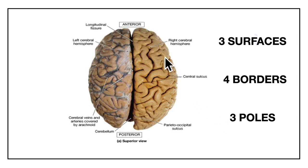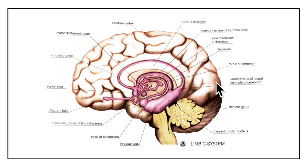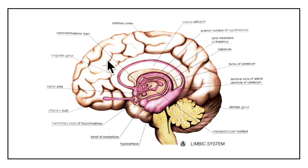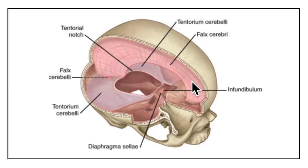For better understanding, I will be explaining these terms on the basis of one cerebral hemisphere, but the features are applicable to both. In the sagittal section, this is the medial surface of the right cerebral hemisphere. The medial surface is flat and vertical. It is separated from the corresponding part of the opposite hemisphere by the falx cerebri and the longitudinal fissure. The falx cerebri is a crescent-shaped fold of meningeal layer that separates the two cerebral hemispheres.